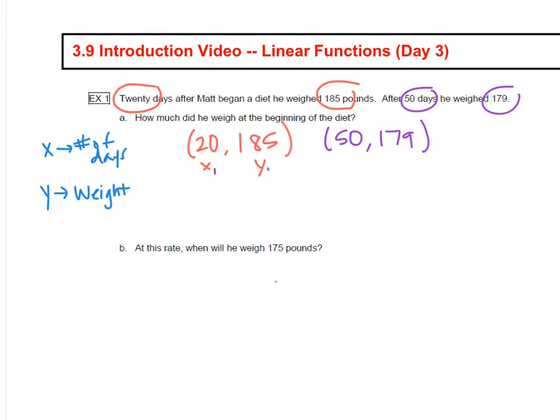So we're going to write an equation so that we can answer the question. First, we're going to need the slope because we don't know the slope. So slope is equal to Y2 minus Y1, 179 minus 185, over X2 minus X1, 50 minus 20. And we get negative 6 over 30, which reduces to negative 1 fifth.